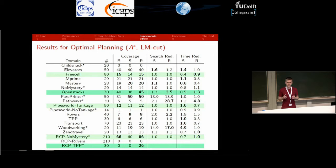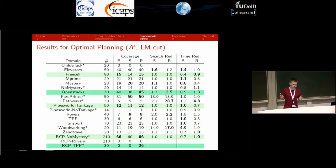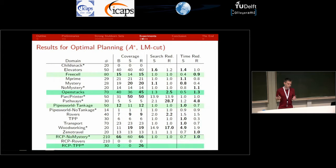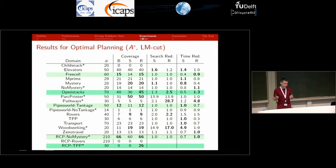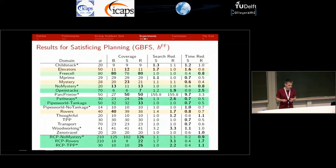This table gives a per-domain summary of optimal planning results including coverage, average search reduction factors, and time reduction factors of the stubborn set variants relative to the baseline. The B column gives results for the baseline, S for the standard stubborn set, and R for the resource variant. There are only a few cases where consideration of resources changes coverage. The impact is most prominent in resource-constrained TPP, where neither the baseline nor the standard configuration solves even a single instance, while the resource stubborn set solves almost all instances. There are also several cases where search reduction and stubborn set construction overhead were both improved significantly using the resource variant.